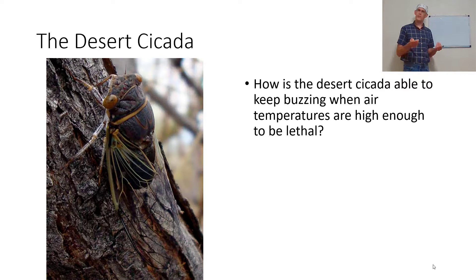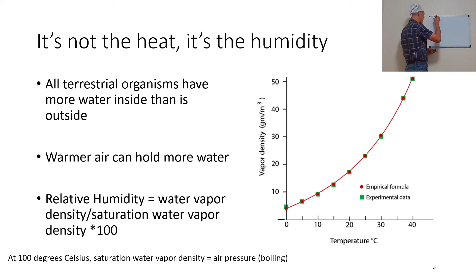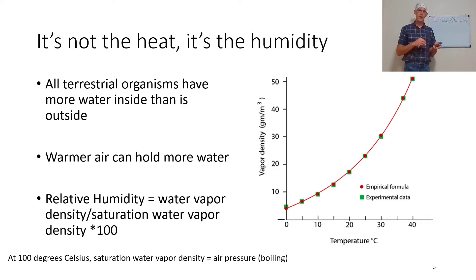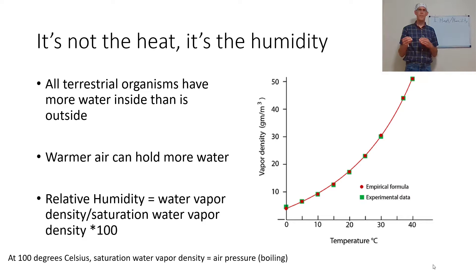We're going to start water relations by relating heat to humidity. If you remember in the temperature lecture, I mentioned how temperature and water are intimately related — you can't really think about one in ecology without thinking about the other. That's because terrestrial organisms have more water inside them than there is in the environment, and warmer air can hold more water, so there's a relationship between air temperature and water availability.